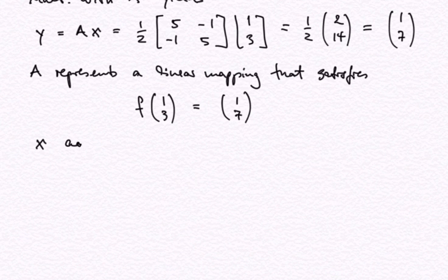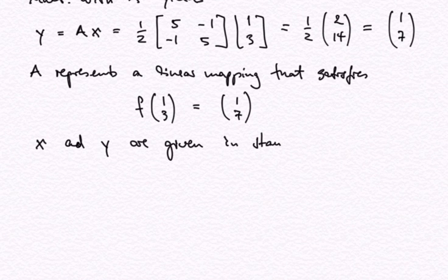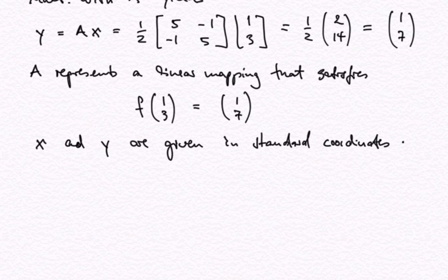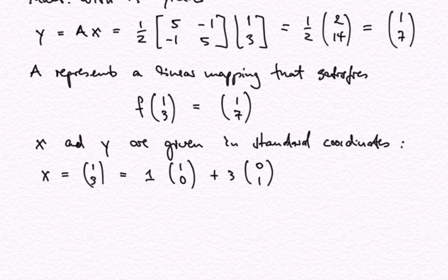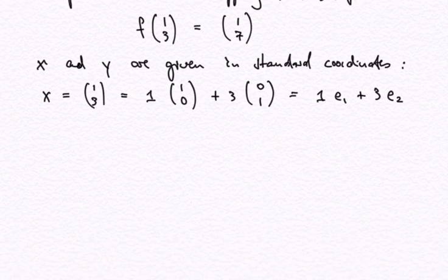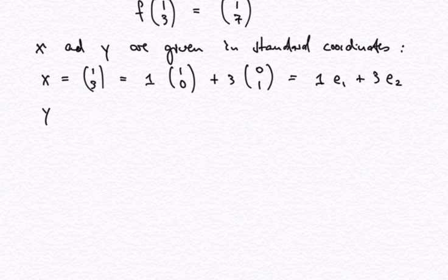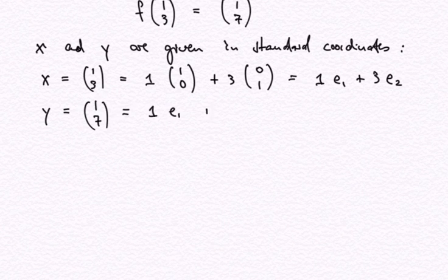Now X and Y are of course given in standard coordinates. What do I mean by that? X = (1,3) is 1 times the first standard basis vector (1,0) plus 3 times the second standard basis vector (0,1) — let me write E1 and E2 for these. And Y = (1,7) is 1 times E1 plus 7 times E2.